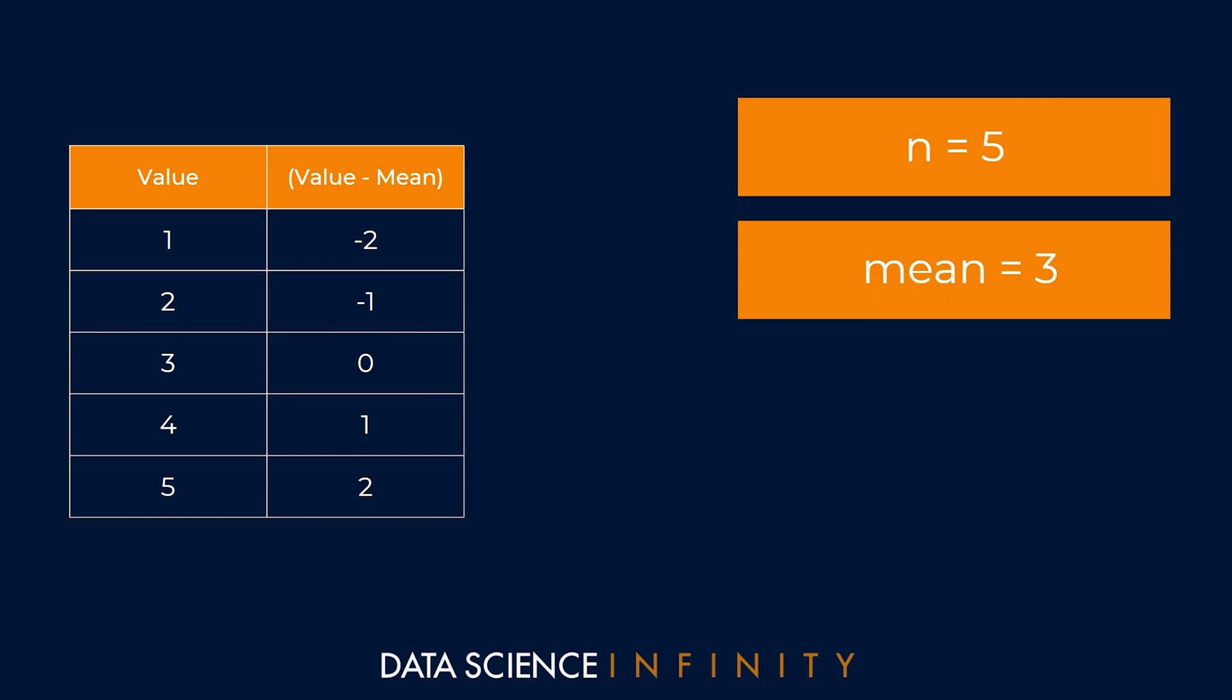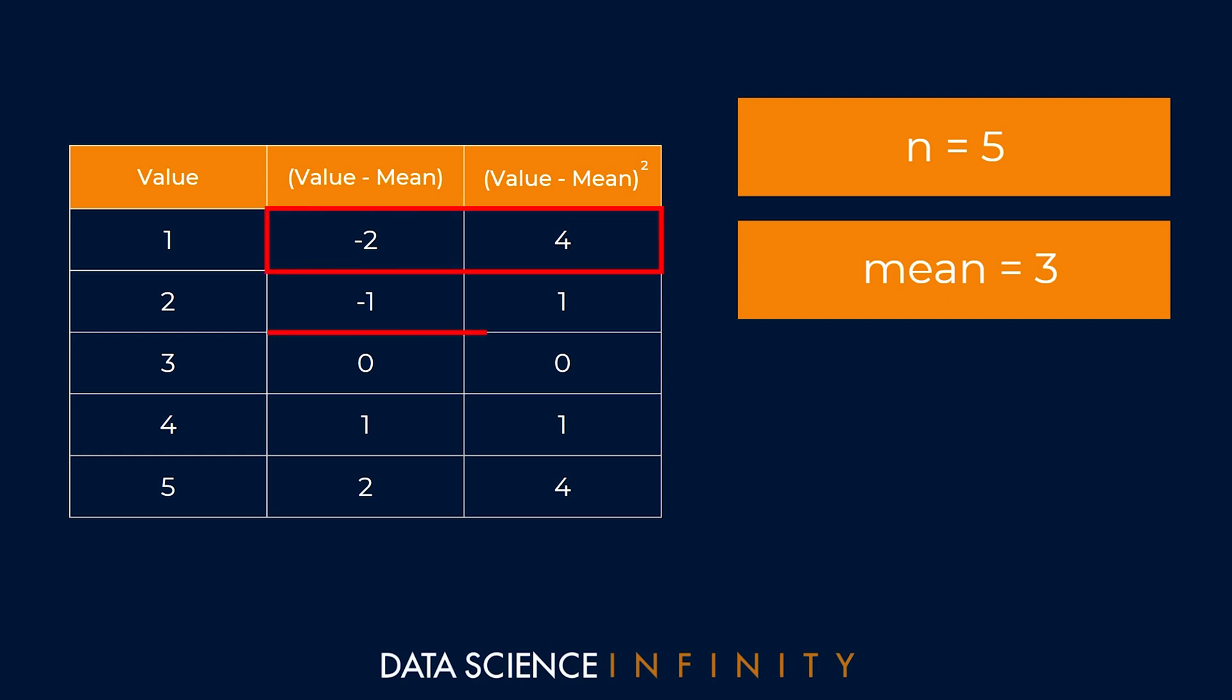Once we've taken away the mean, the next step was to square those values to ensure that they are all positive. And in our example, this would result in these values here in the third column. And again, just to be super clear, this third column is showing each of the values in that middle column squared. So negative two squared is four, negative one squared is one, zero squared is zero and so on.